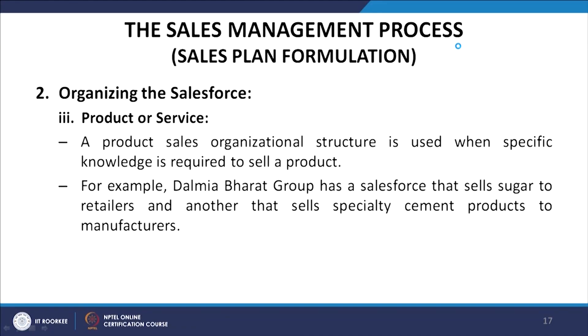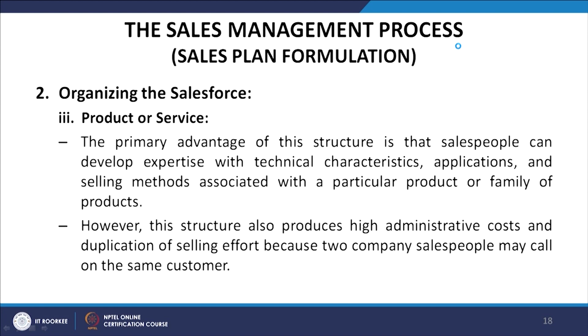The third type of organization is product or service based. A product sales organizational structure is used when specific knowledge is required to sell a product. For example, Dalmia Bharat Group has a sales force that sells sugars to retailers and another sales force that sells specialty cement products to manufacturers. The primary advantage is that salespeople can develop expertise with technical characteristics, applications, and selling methods associated with a particular product or family of products. However, this structure also produces high administrative costs and duplication of selling efforts because two company salespeople may call on the same customer selling different things.